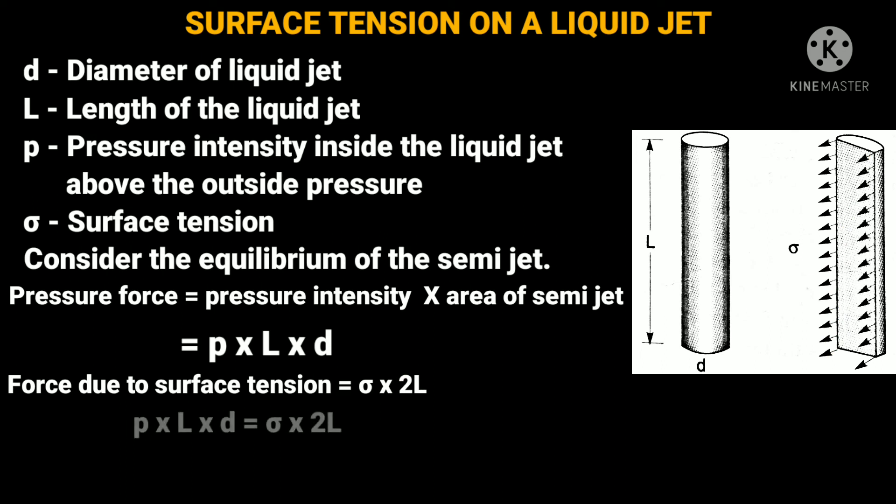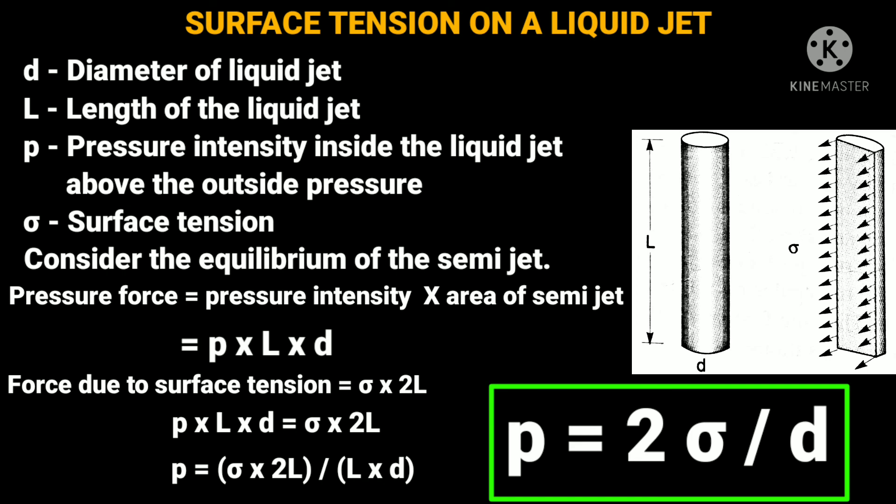Then equating forces, we will get p into L into d that is equal to sigma into 2L. Therefore, pressure intensity will be sigma into 2L by L into d. That is finally, p is equal to 2 sigma by d. Thank you for watching this video.